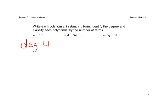They don't even ask us for the leading coefficient here, but if they did it would be negative 3. And then it says classify each by the number of terms — one term, we call that a monomial. Mono meaning one — monomial.